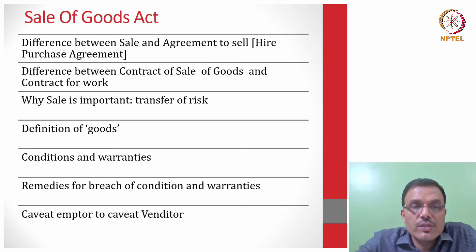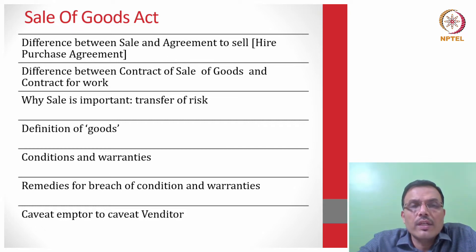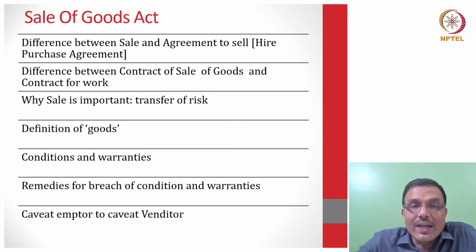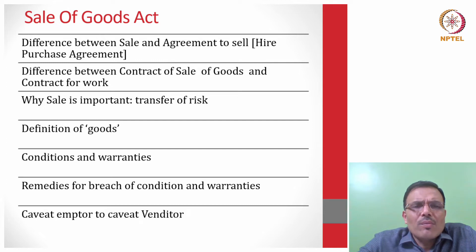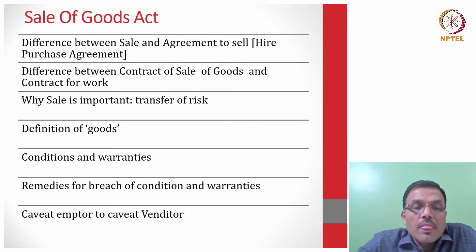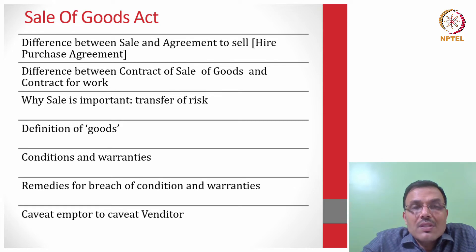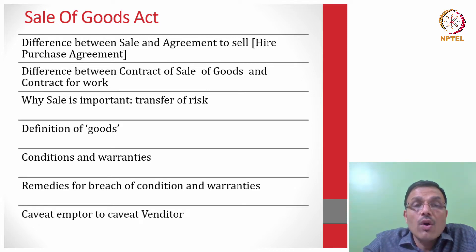Moving on to a legislation which is a contract law that was part of the 1872 Indian Contract Act, it was later considered necessary to make a separate legislation called the Sale of Goods Act of 1930. This is a very important legislation for many reasons, promoting trade and commerce in goods, as distinct from contracts for services or contracts of work.